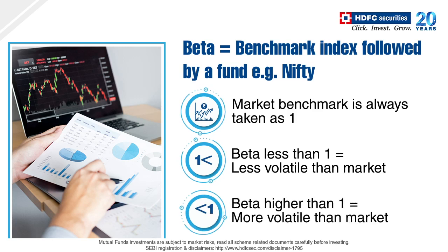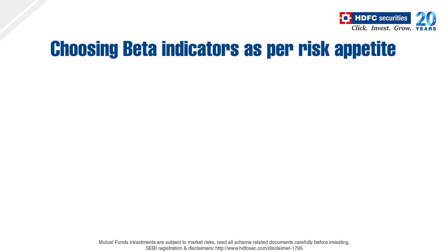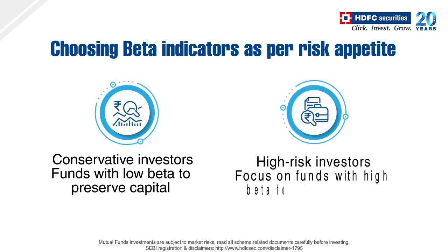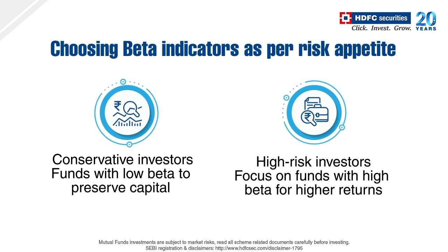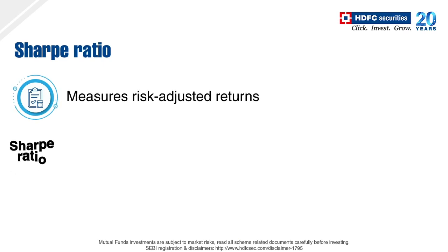In case the beta is higher than 1, it denotes that the fund returns are more volatile than market returns of the index. As an investor, you should choose funds' beta ratio according to your risk-taking capacity. If you are a conservative investor, you should focus on investing in funds with low beta to avoid value erosion. However, if you have a high risk appetite, you may focus on funds with high beta for higher returns.